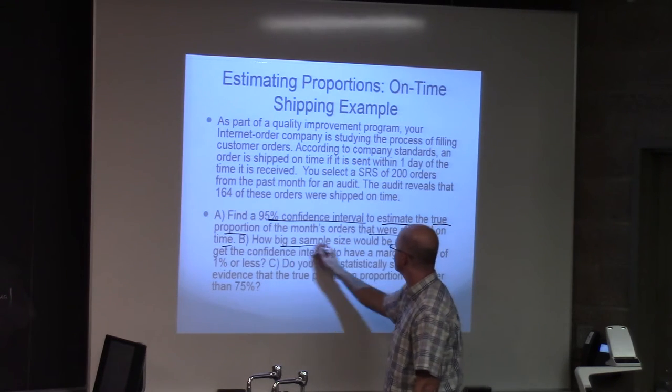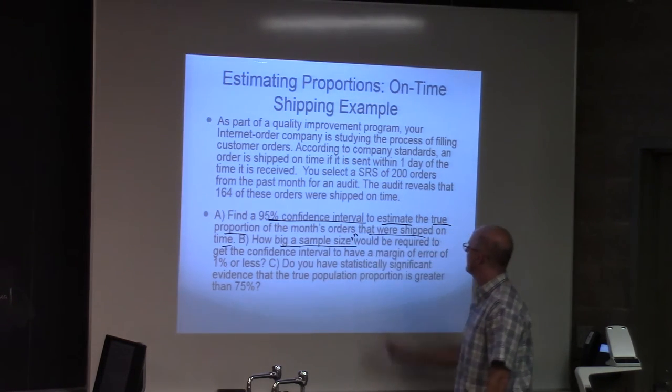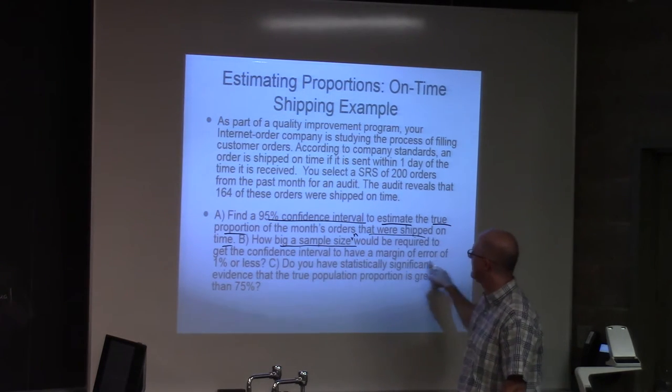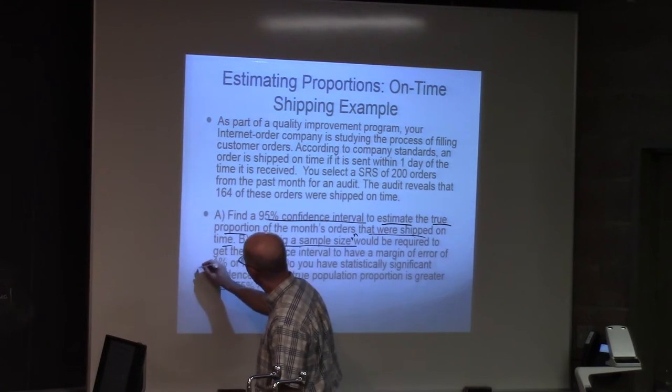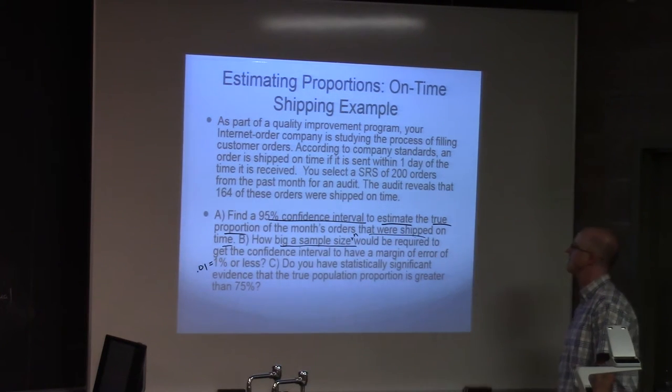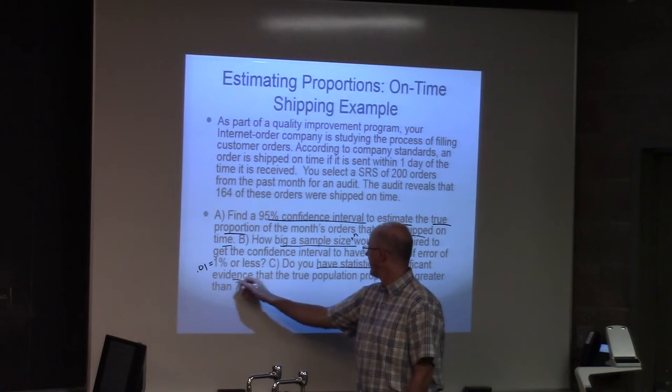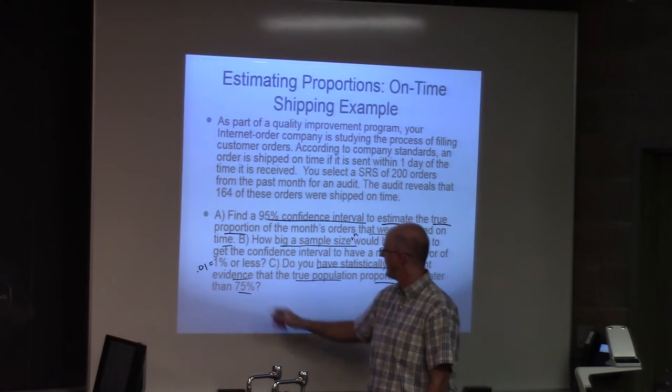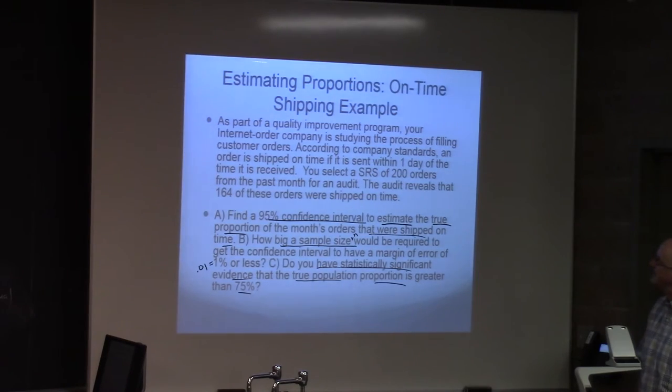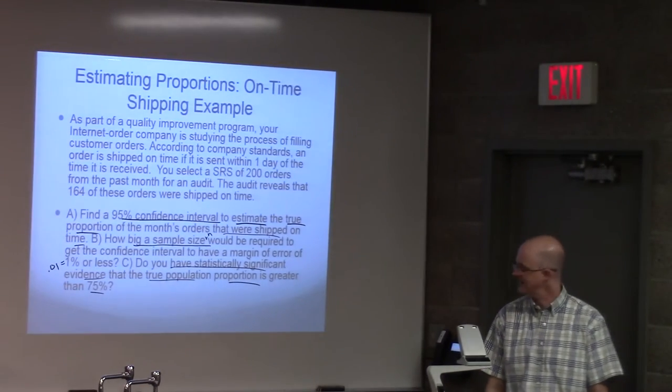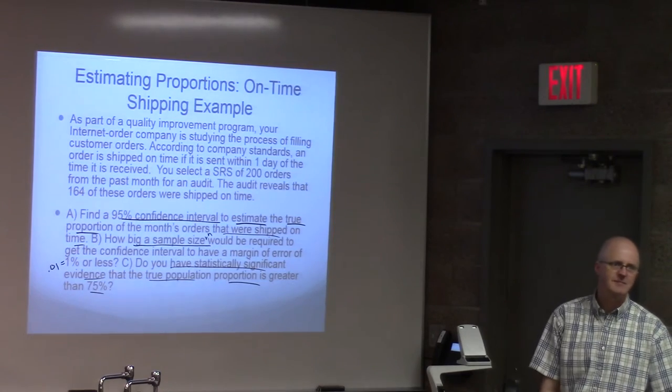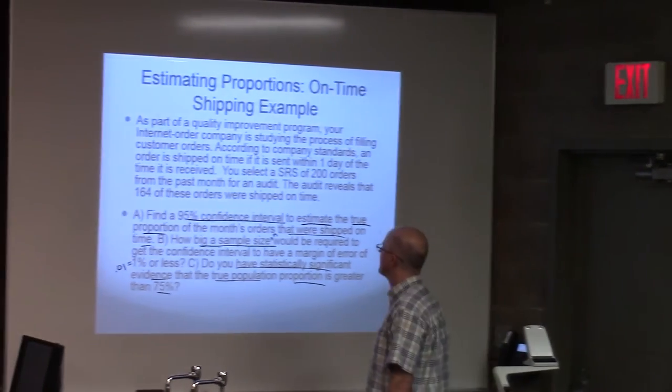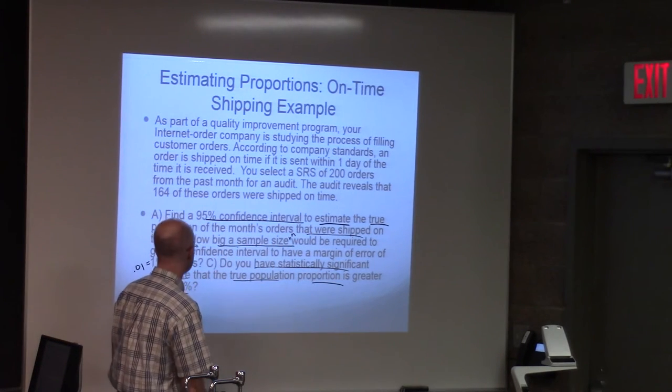Three things to do. Find a 95% confidence interval to estimate the true proportion, population proportion, of the month's orders that were shipped on time. Second question, how big a sample size N would be required to get the confidence interval to have a margin of error of 1% or less. And C, do you have statistically significant evidence that the true population proportion is greater than 75%?